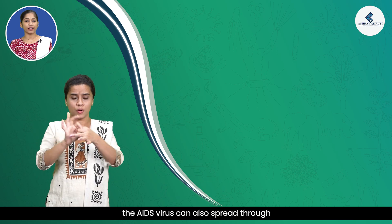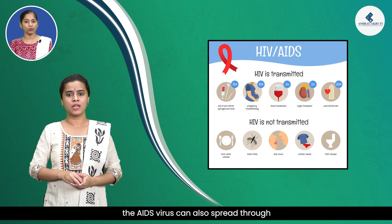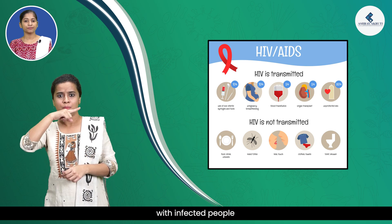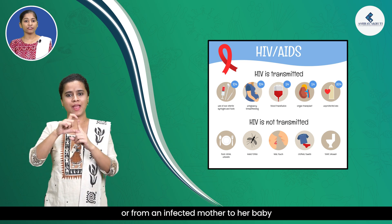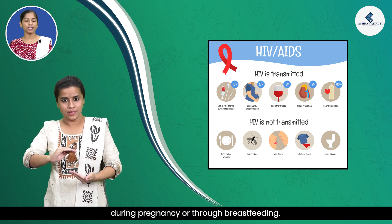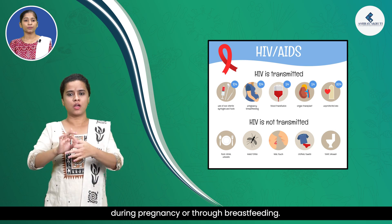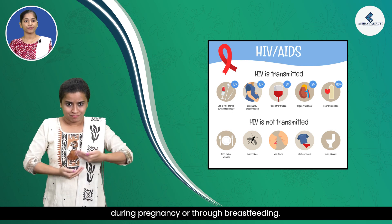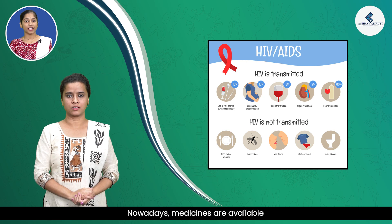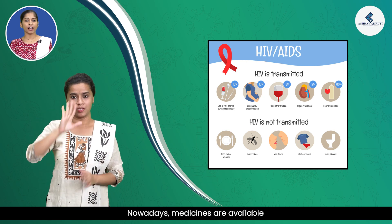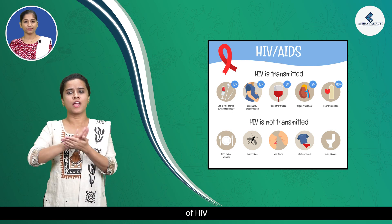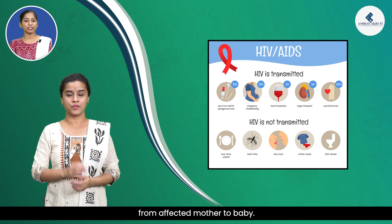AIDS is spread through blood-to-blood contact with infected people, or from an infected mother to her baby during pregnancy or through breastfeeding. Nowadays, medicines are available to prevent the transmission of HIV from an affected mother to her baby.